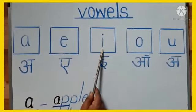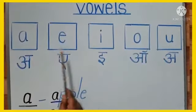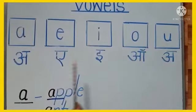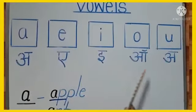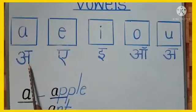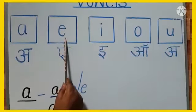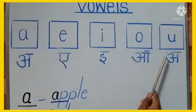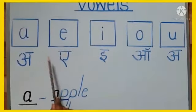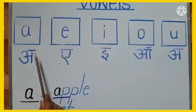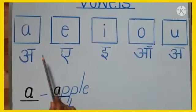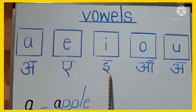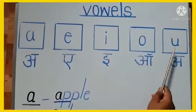The 5 vowels are A, E, I, O, and U. We also learnt the sound of these vowels in the last class. A makes sound A, E makes sound A, I makes sound E, O makes sound O, and U makes sound A. Let's say the vowels with their sounds once more: A says A, E says A, I says E, O says O, U says A.